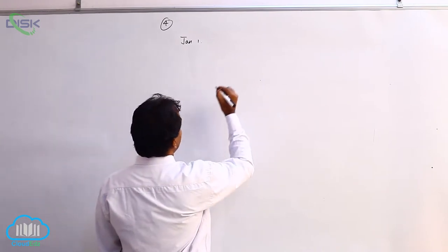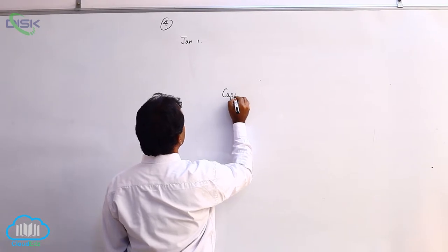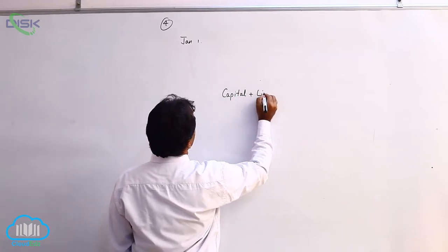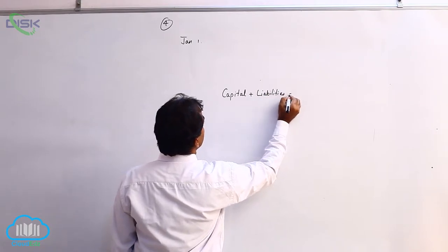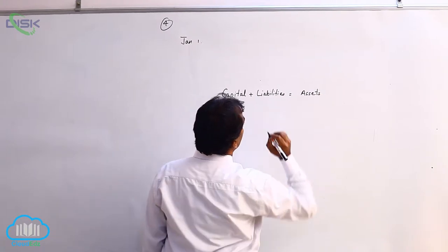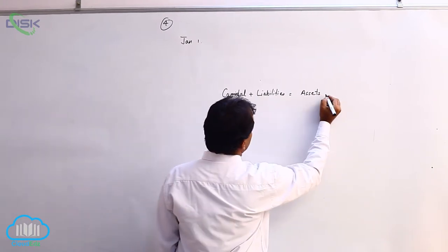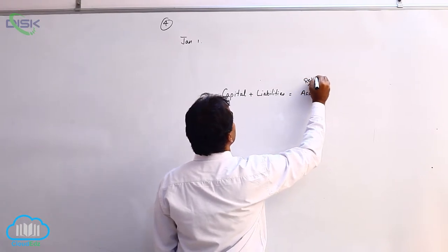Basically we have studied it as capital plus liabilities equals assets. Now what are assets? We discussed previously assets are nothing but resources.